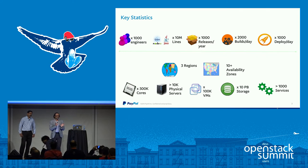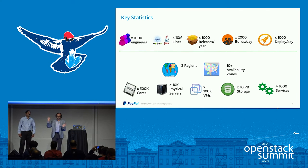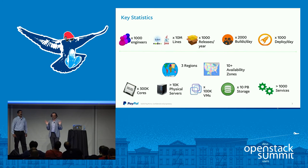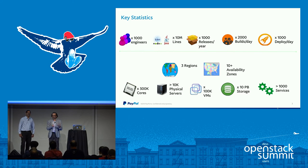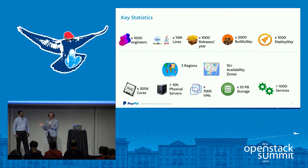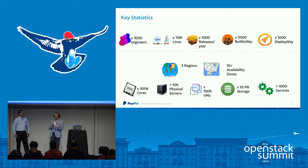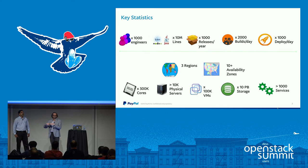We distribute those availability zones into what we call the production cloud and the dev QA cloud. The dev QA is where practically all developers directly interact with OpenStack — with Horizon, CLI, or API. They'll create their VMs and block volumes, right into Swift. The production zones are strictly controlled, where the PaaS layer or a release engineering team will deploy applications. Within the production zones, you have an active-passive deployment system, and we are now moving towards active-active, with applications deployed across availability zones and across regions for maximum availability.